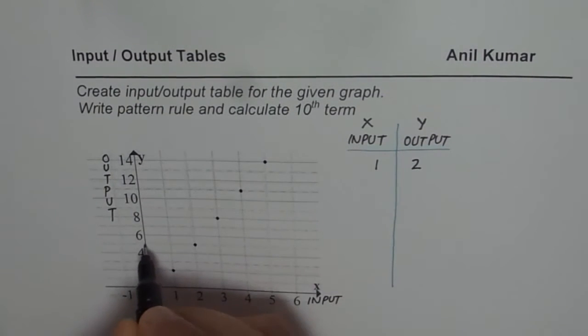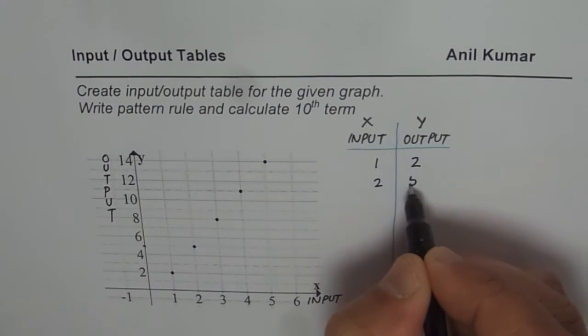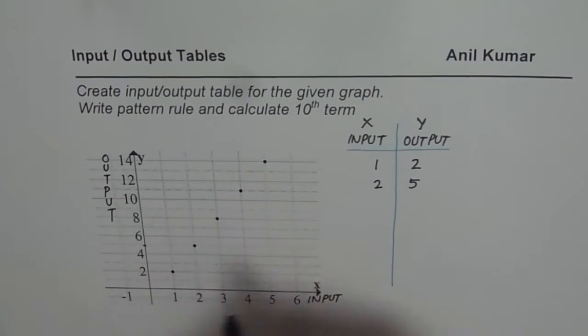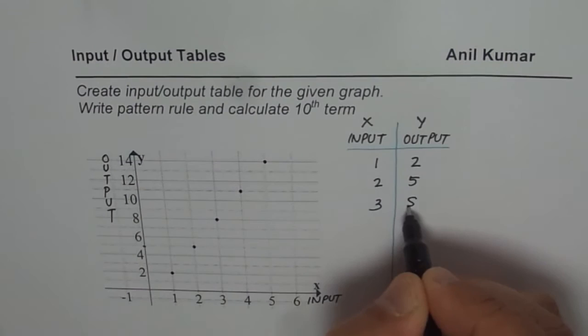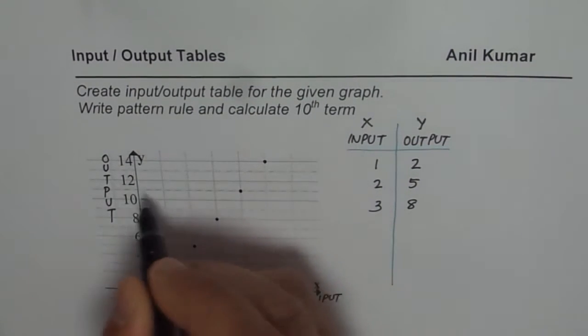2 and this point is 5. So we have 2, 5. At 3, the value is 8. So at 3, we have 8 as the output. At 4, it is 11.